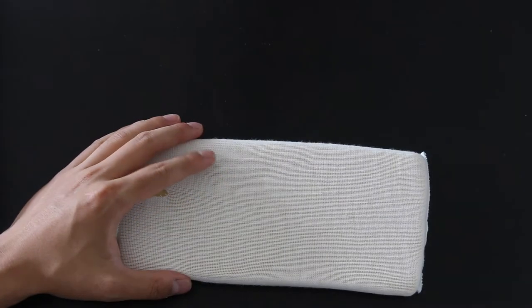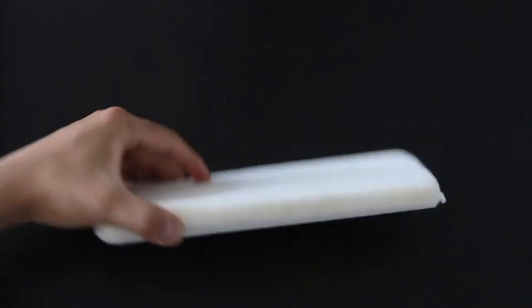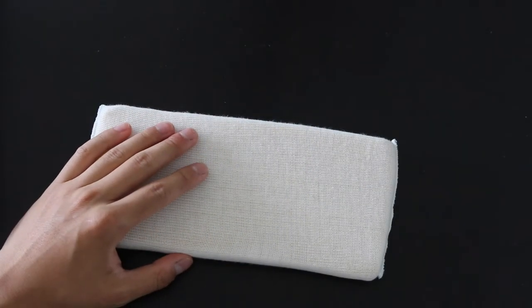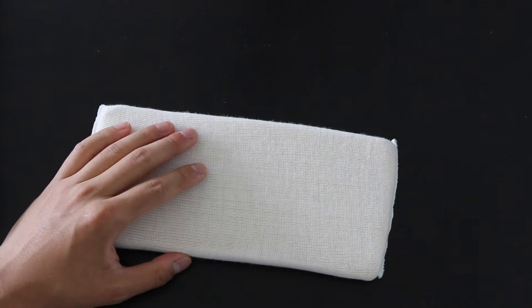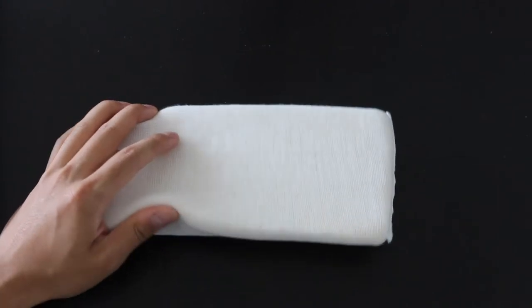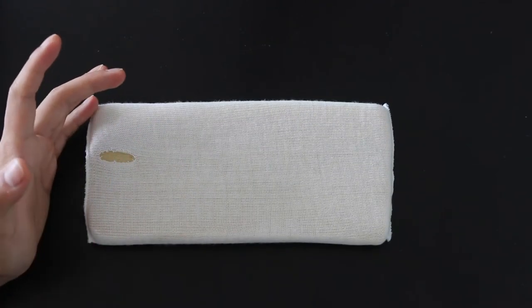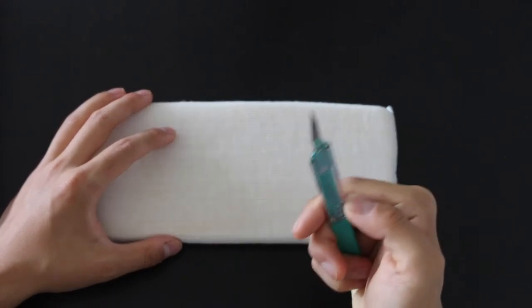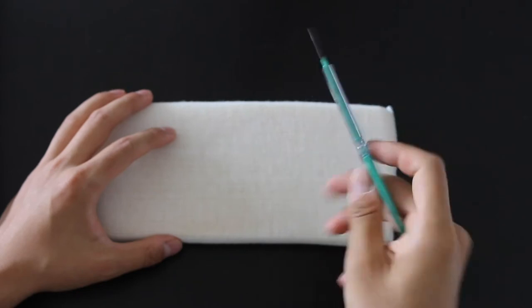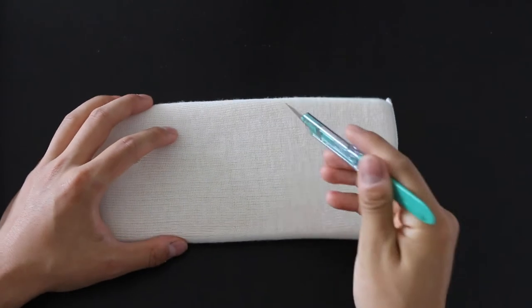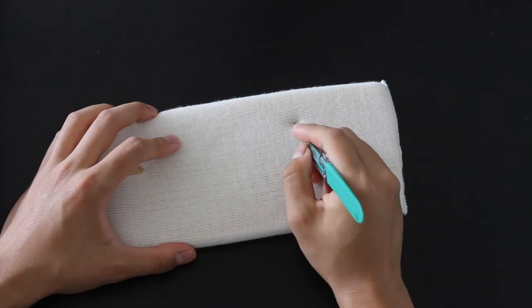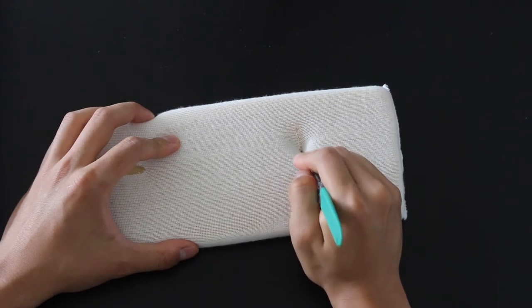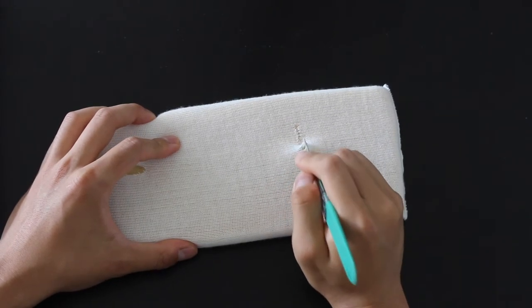To start, we're going to actually need to make a laceration. So here I just have a soft arm board. You could use chicken breast, preferably with skin, hogs feet, or any kind of soft object that you can cut and put stitches into. We're going to take our scalpel, we're going to pull back our guard so the needle is exposed and just with a little bit of pressure, we're going to make a straight line, maybe half a centimeter deep and about an inch long.